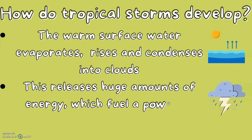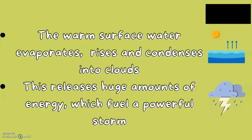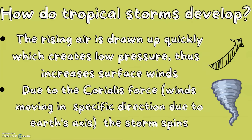How do tropical storms develop? Due to the increased temperature and heat, the warm surface water evaporates, rises and condenses into clouds. This releases huge amounts of energy, which fuel a powerful storm. The rising air is drawn up quickly, which creates low pressure, thus increasing surface winds.